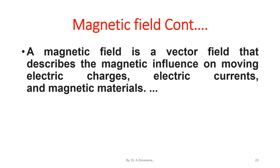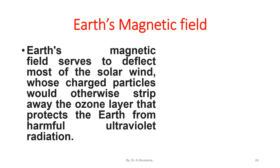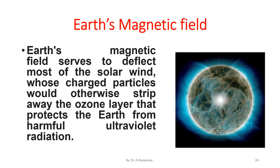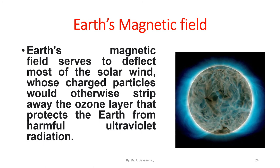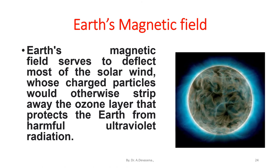A magnetic field is a vector field that describes the magnetic influence on moving electric charges, electric currents, and magnetic materials. Earth's magnetic field serves to deflect most of the solar wind, whose charged particles would otherwise strip away the ozone layer that protects the earth from harmful ultraviolet radiation. Here is a representation of the earth's magnetic field surrounding the earth.